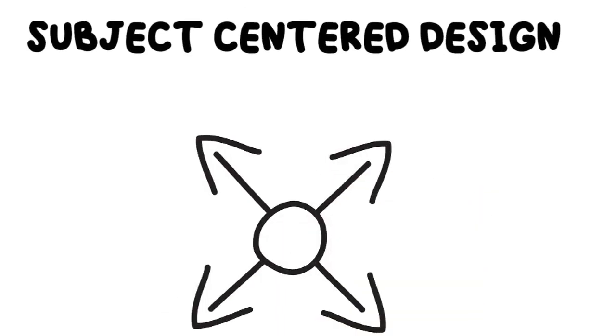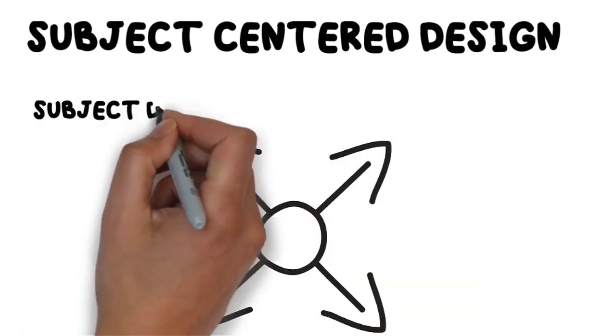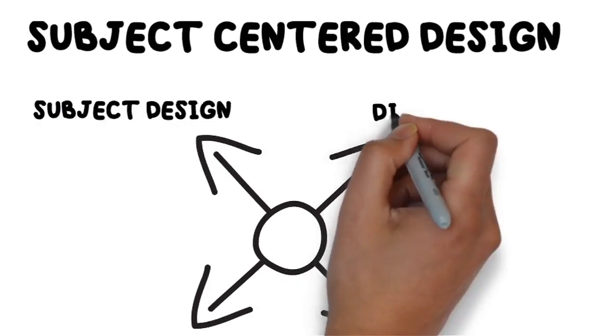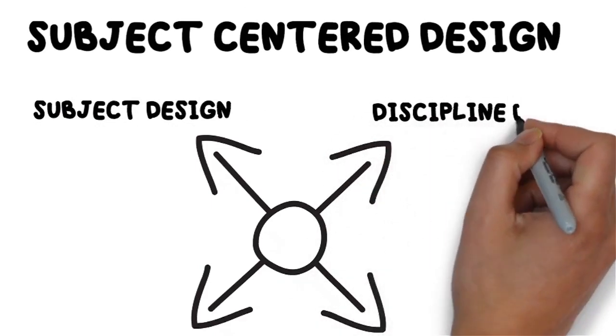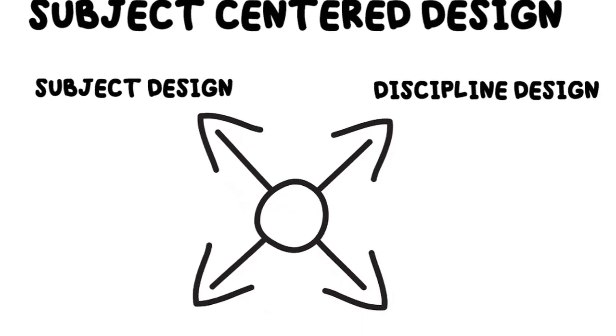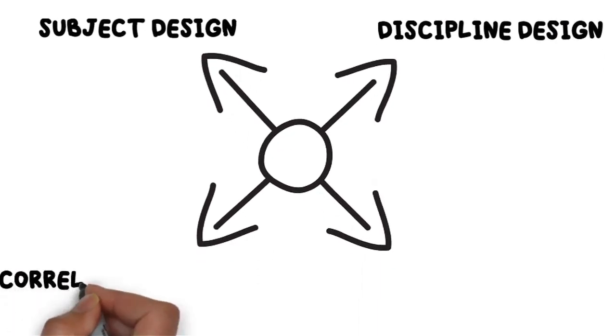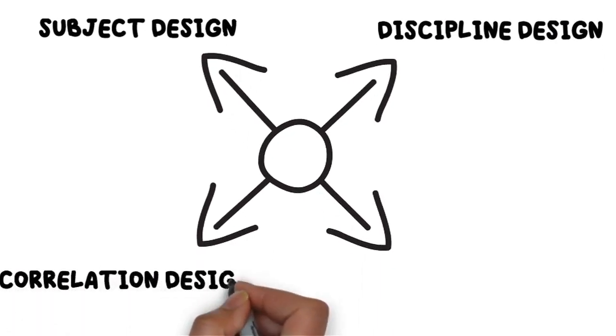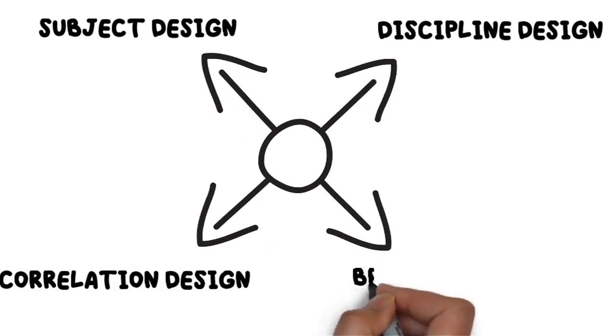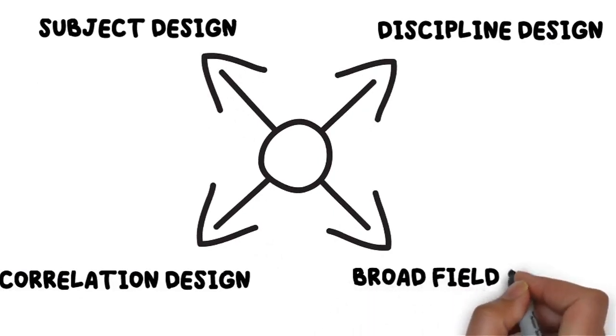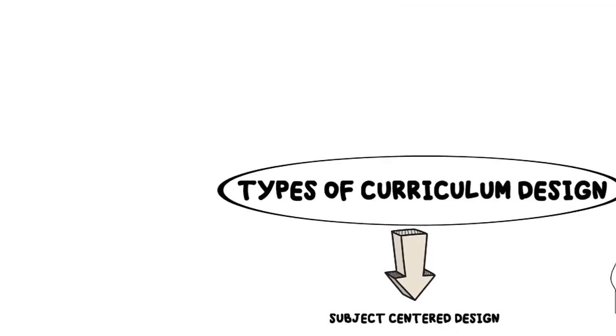Under the subject-centered design, there are three. One is the subject design, which focuses on the cluster of content. Two is the discipline design, focuses on academic disciplines. Three is the correlation design, comes from a core correlated curriculum design that links separate subject designs in order to reduce fragmentation. And number four, the broad-field design is also known as the interdisciplinary design. These designs in such a way that the compartmentalization of subjects is avoided.